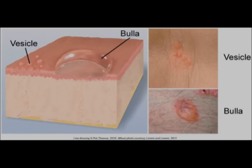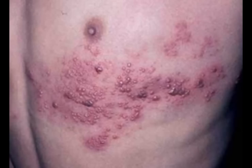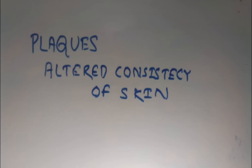A vesicle is a fluid-filled, circumscribed elevated lesion. These lesions arise due to split skin. Big-sized vesicles are called bullae. Vesicles may be of three types: first, sub-corneal; second, intraepidermal; and third, dermal-epidermal.